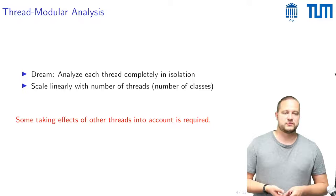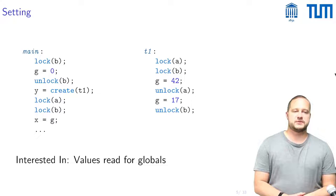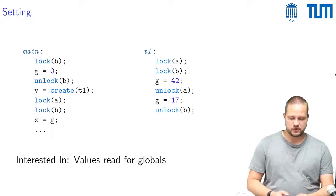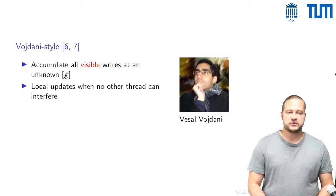So let's describe the setting for this concrete work. As we said we have multi-threaded programs and what we're interested in for these for now is the values that one reads for globals. We will contrast two different approaches to this that one finds in literature.